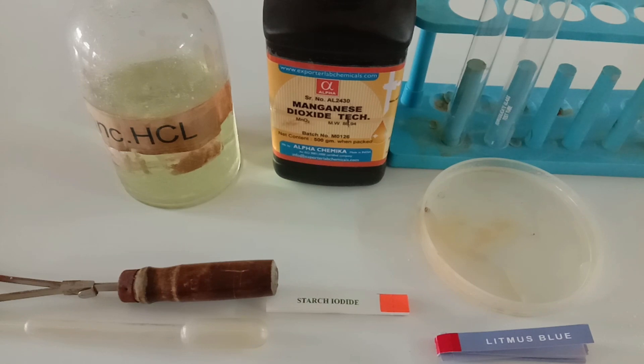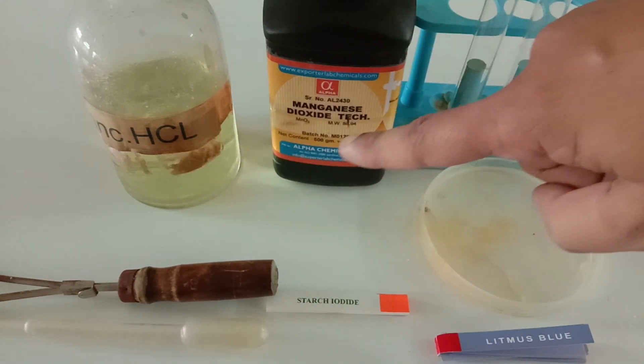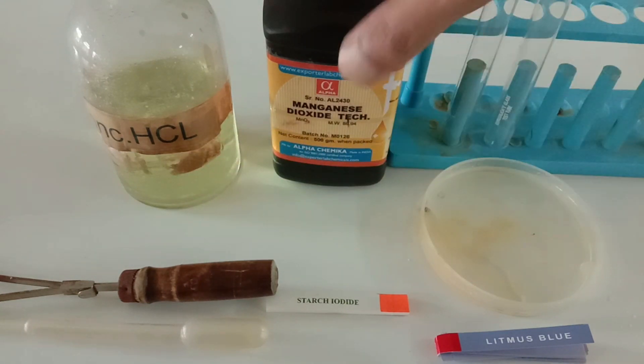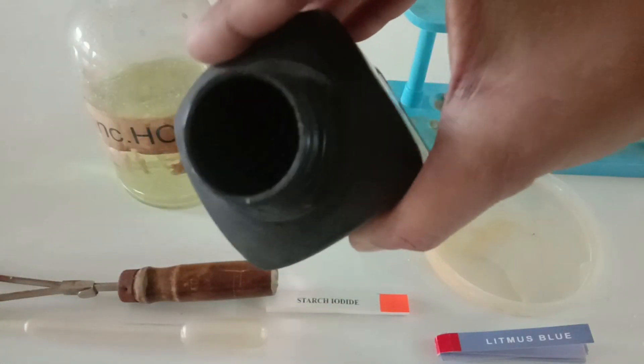For this experiment, I'm going to use concentrated hydrochloric acid and manganese dioxide powder. Manganese dioxide powder is charcoal black in color.